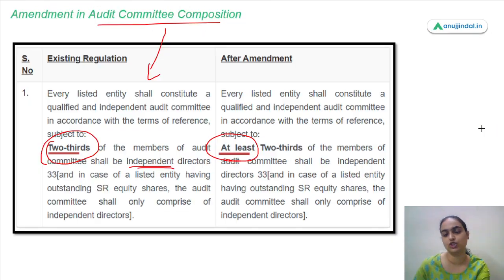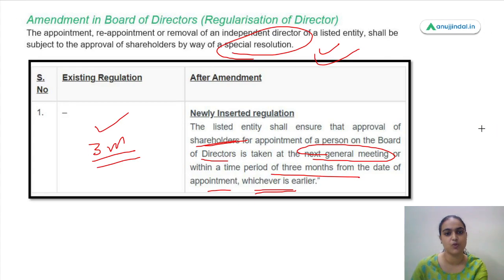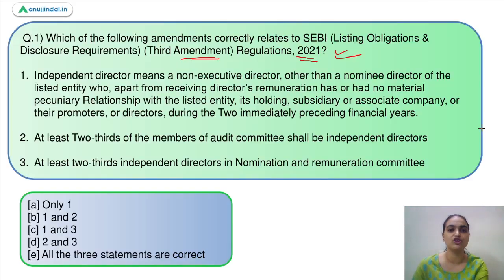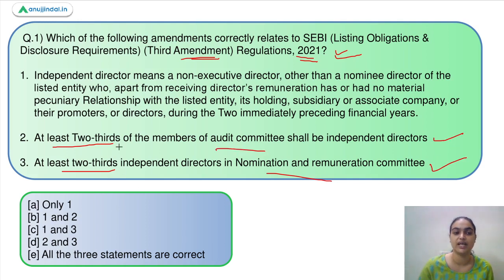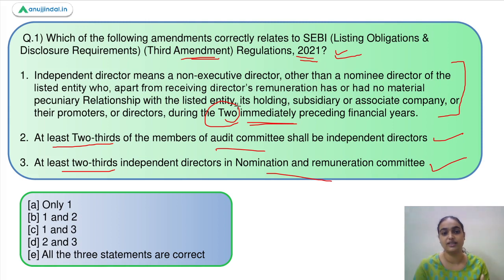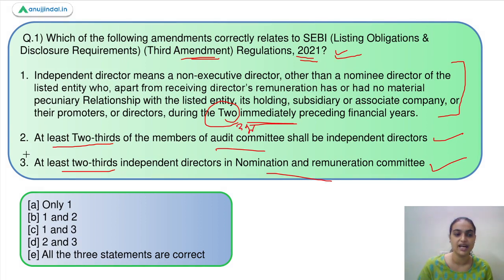Coming back to question one, we need to identify the correct statements. The requirement of at least two-thirds independent directors in both the audit committee and the NRC is correct per the amendment. The first statement is incorrect because it mentions two preceding years, but this has been changed to three years. The answer is option D — the second and third statements are correct.